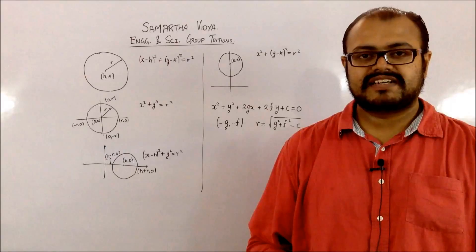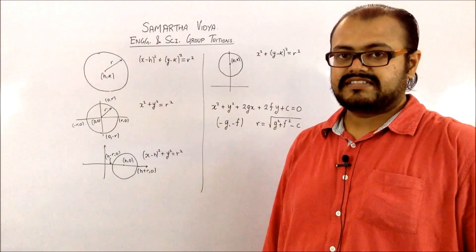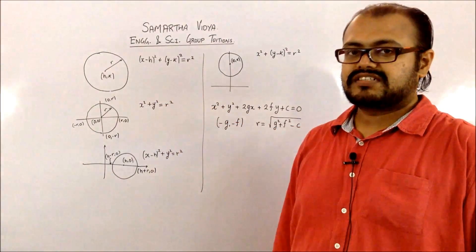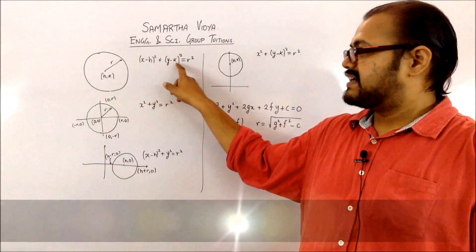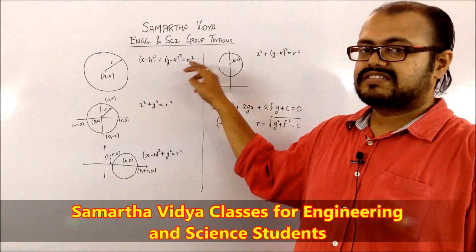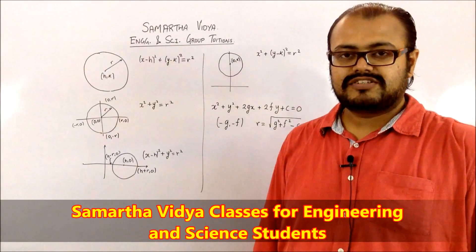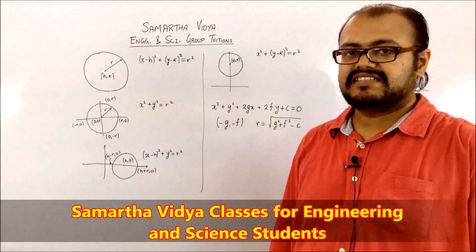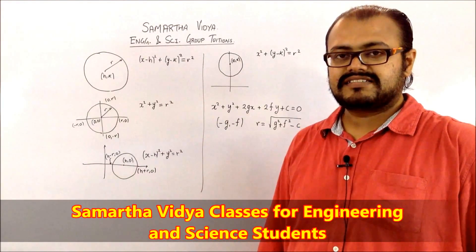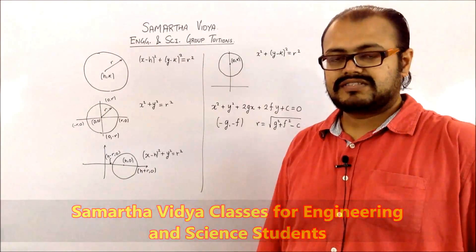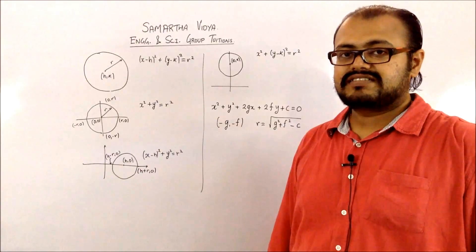Before we solve problems related to circles, let's have a quick recap. If a circle has center (h, k) and radius r, the standard equation is (x - h)² + (y - k)² = r². If you substitute h and k as 0, that is the center is at the origin, the equation becomes x² + y² = r². Whenever you see this equation, the center is at the origin and the radius is the square root of the constant.